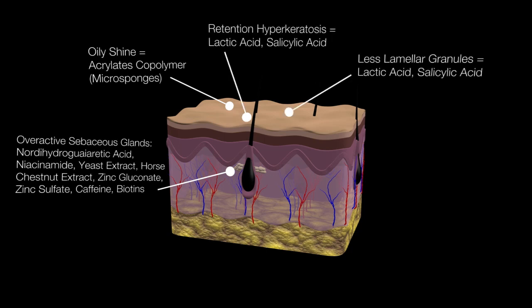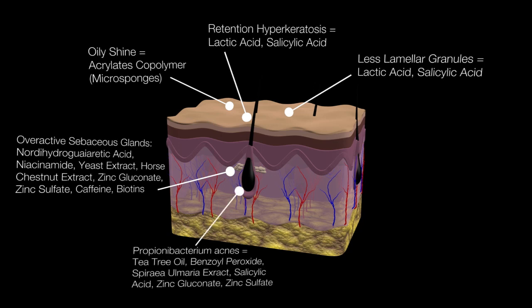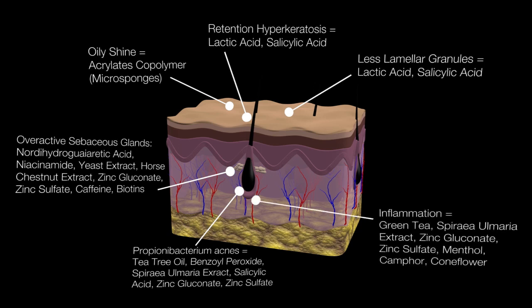To control cell accumulation and reduce impactions in the follicle, we need to stimulate natural exfoliation, superficially as well as in the follicle lining. Salicylic acid and lactic acid are key ingredients to look for. Tea tree oil, benzoyl peroxide, salicylic acid, zinc gluconate, and zinc sulfate will help to control bacteria on the skin surface as well as in the follicle. To reduce redness and inflammation, green tea, menthol, camphor, and coneflower will soothe and repair the skin and also reduce scarring.